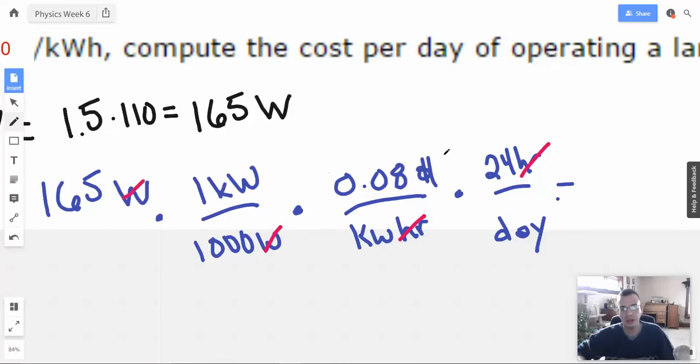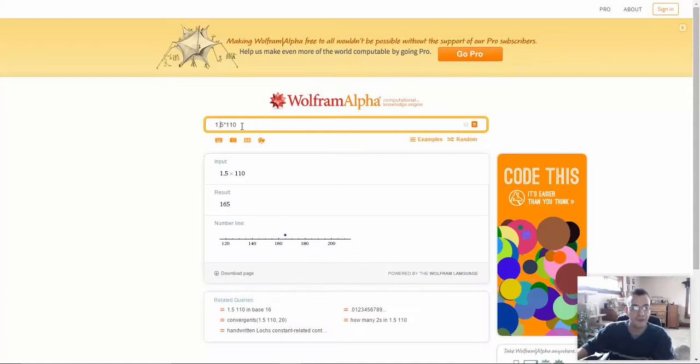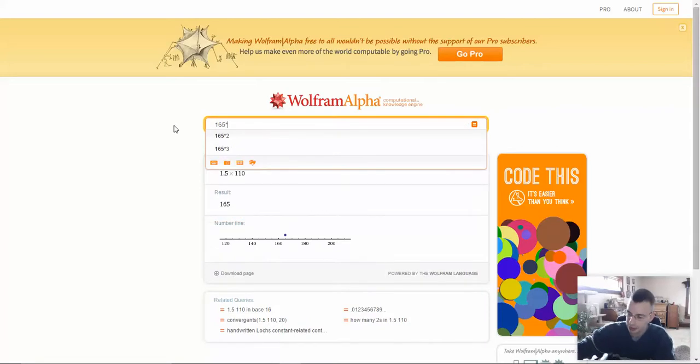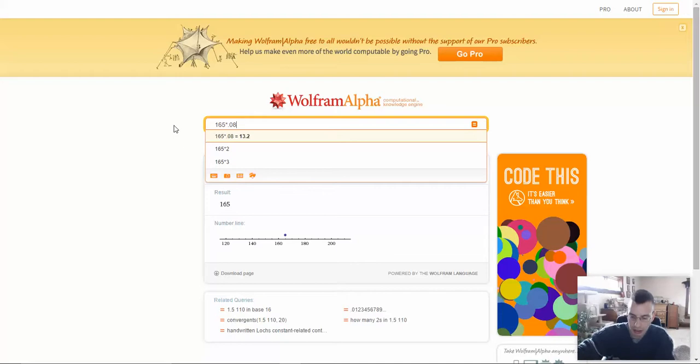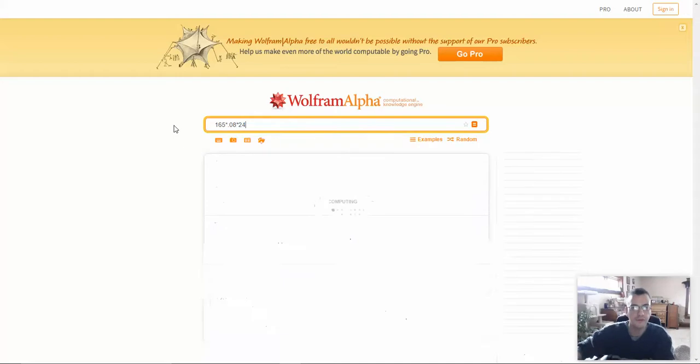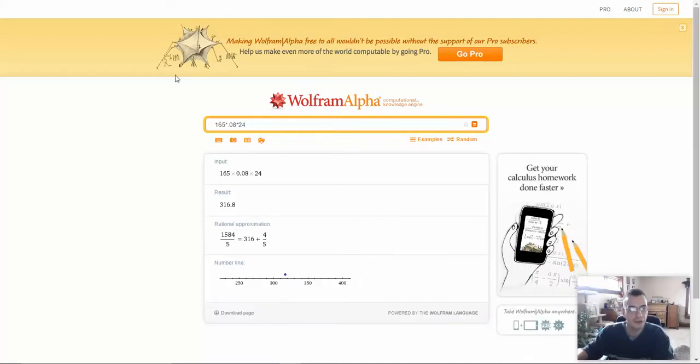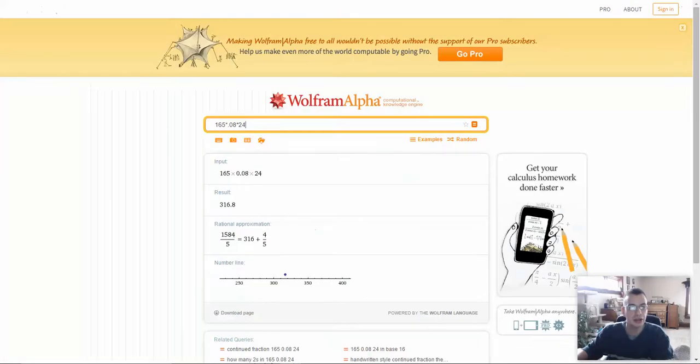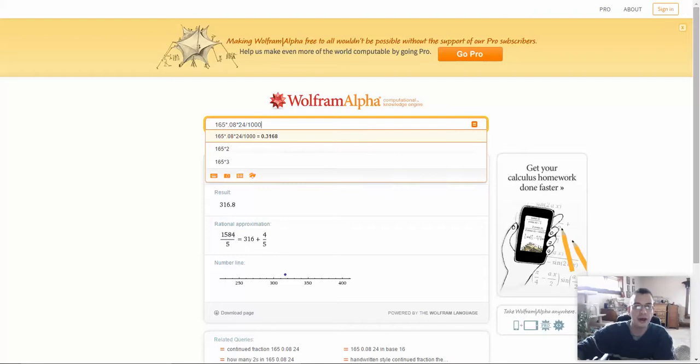Watt, watt. Kilowatt, kilowatt. This gives us 165. 165 times 0.08 times 24. 316.8. Divide by 1,000. Divide by 1,000.